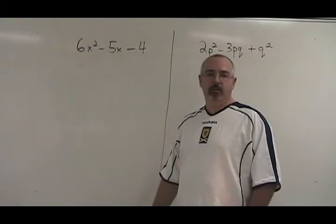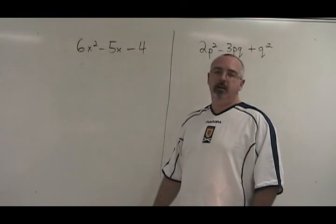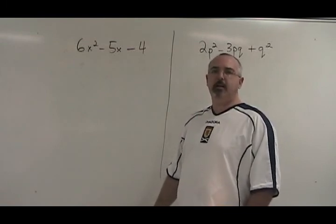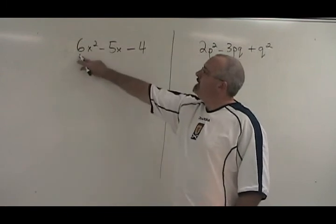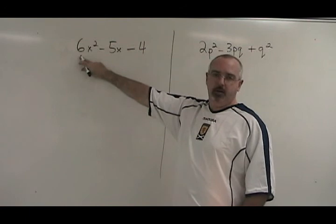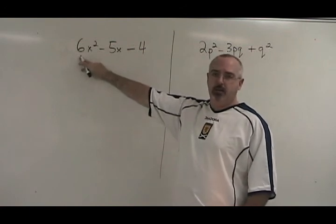The fifth and last of the factoring methods I will teach is what I call complex trinomial. The difference between these and a simple trinomial is that the numerical coefficient of the first term is not one, it's some other number. This can still be factored, but the method changes a little bit.